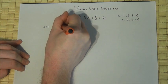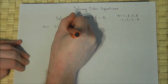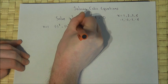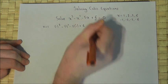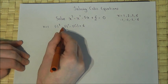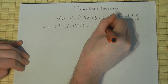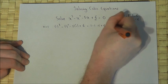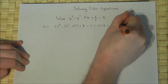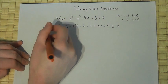If x equals 1: 1 cubed, so I've subbed in 1, minus 1 squared, take 5 times 1, plus 6. 1 cubed is 1, take 1 squared, so 1 take 1, take 5, plus 6. That just equals plus 1. So that's not a root. x equals 1 is not a root.